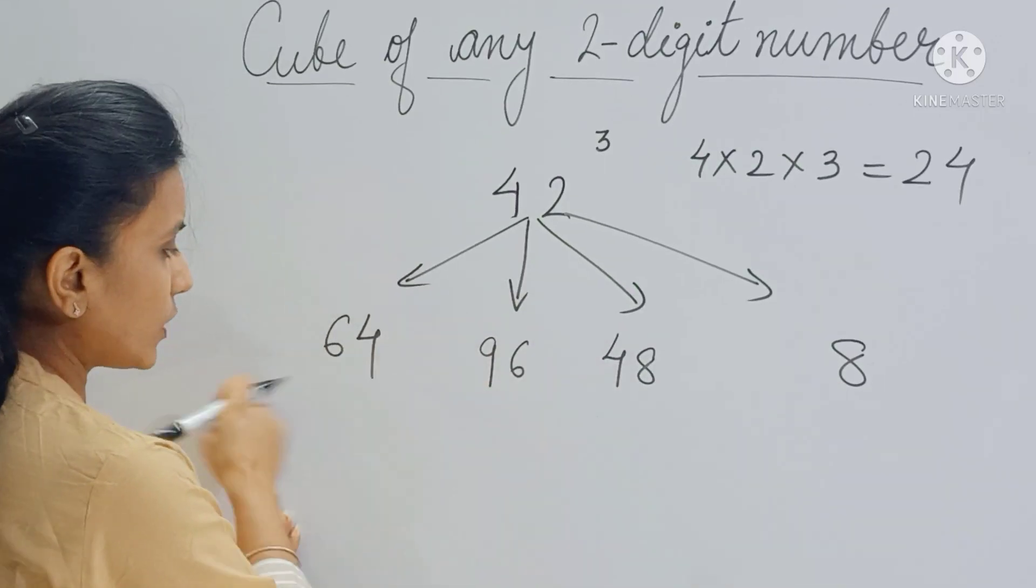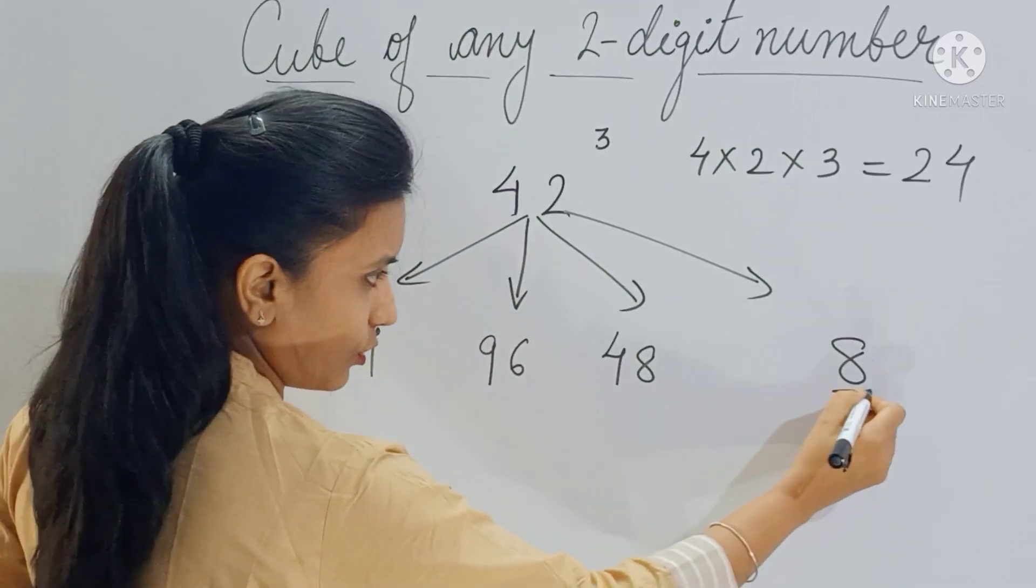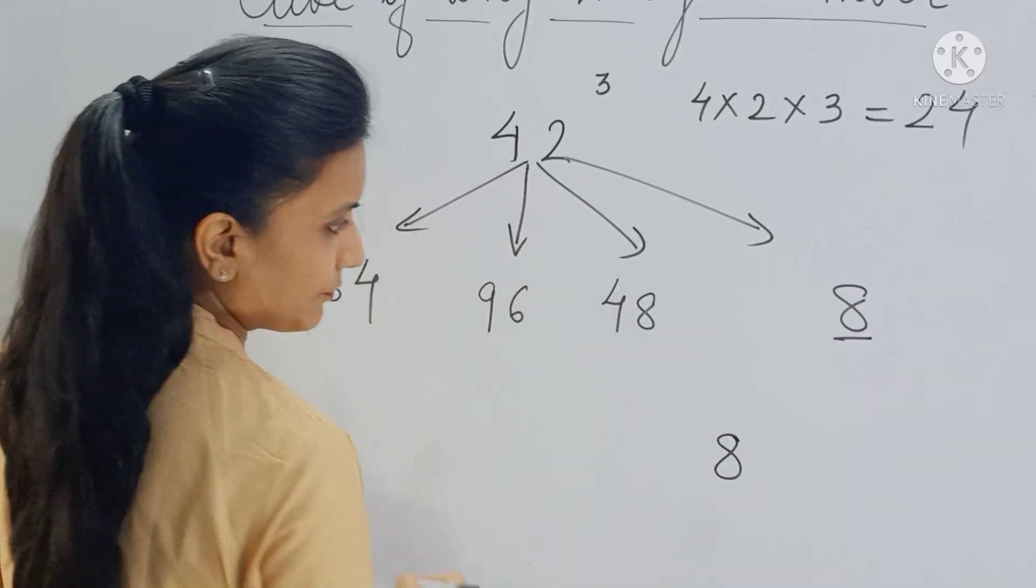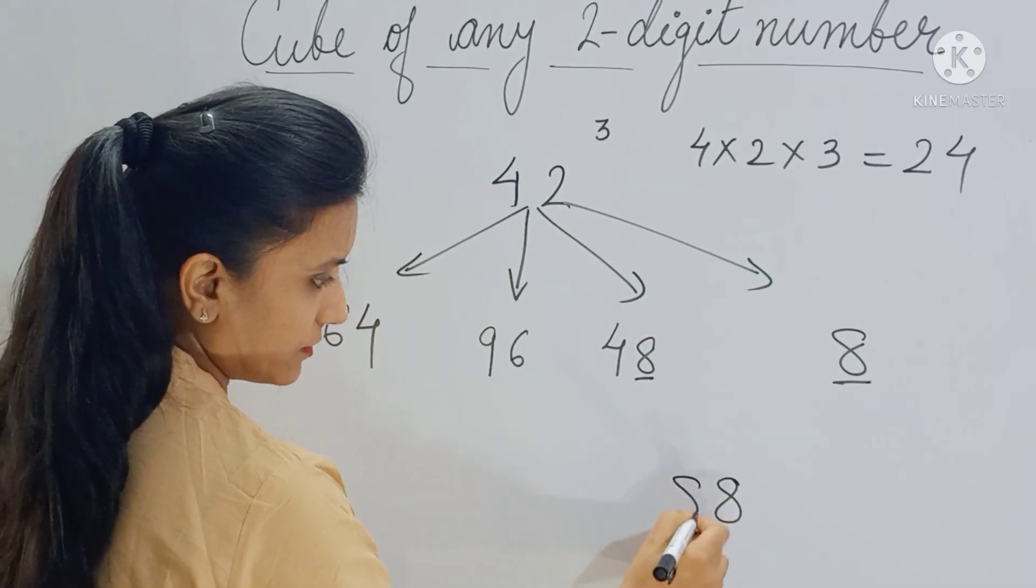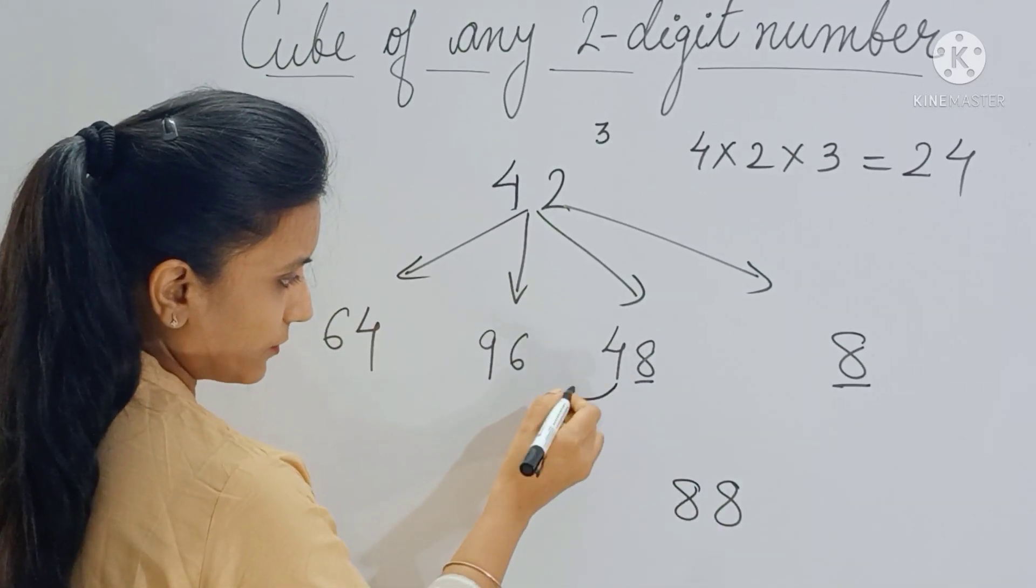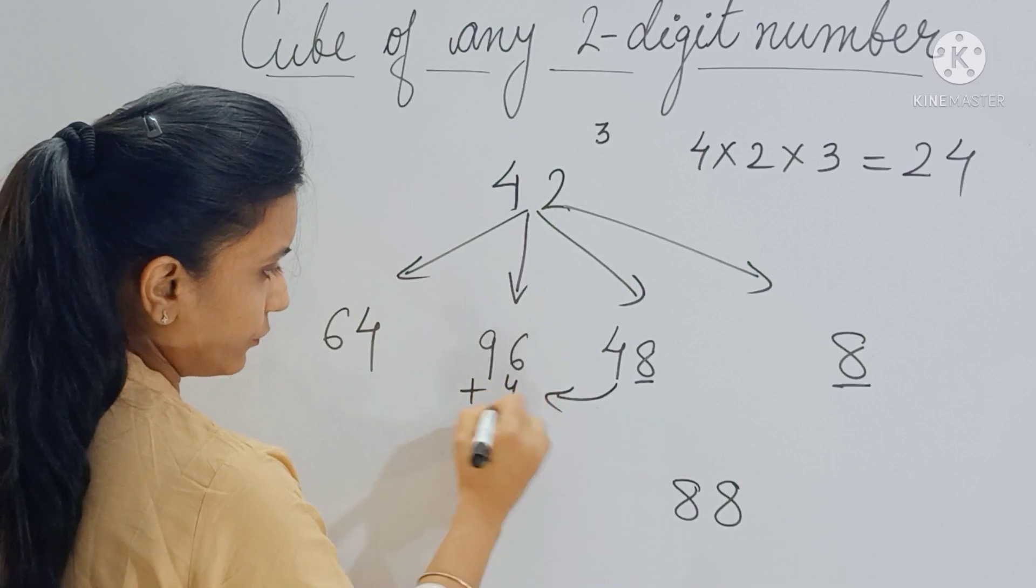Now we will write only the unit place digit. So copy 8 here as it is. This 4 becomes the carry forward, so add 4 here - you get 100.